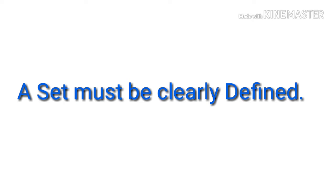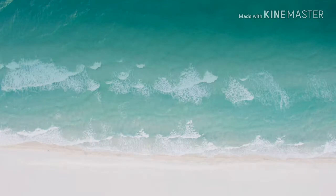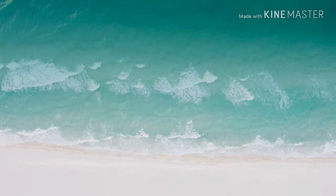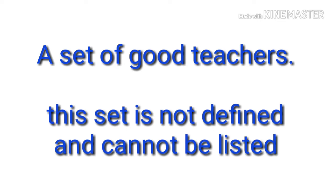A set must be clearly defined. For example, the set of oceans of the world is clearly defined. However, a set of good teachers is not clearly defined and cannot be listed.